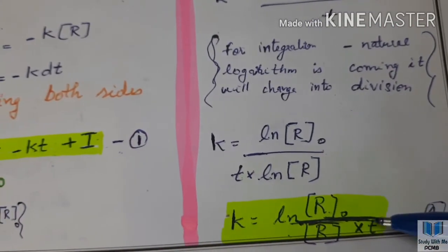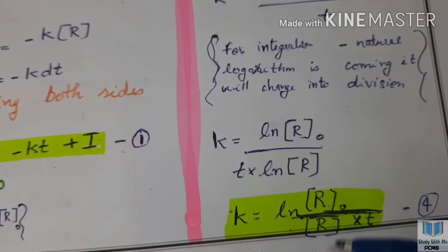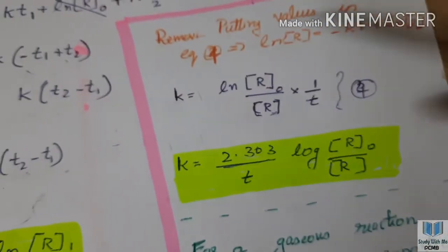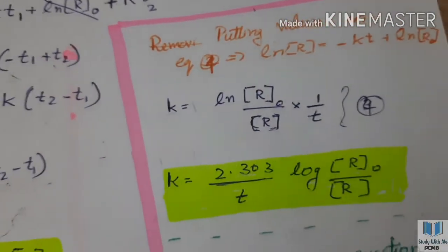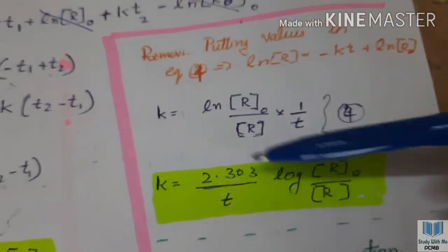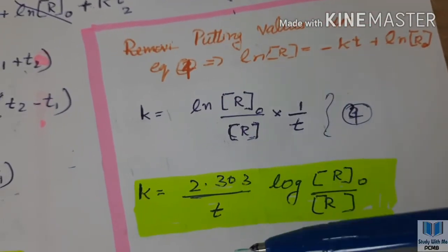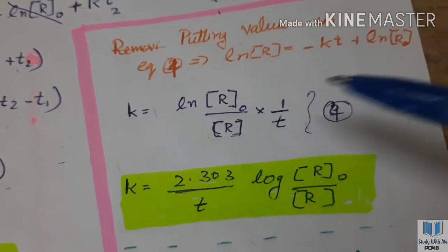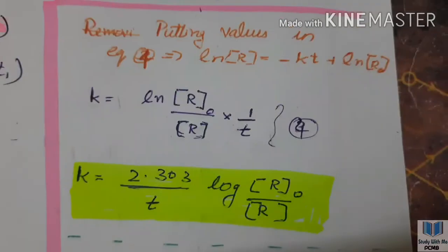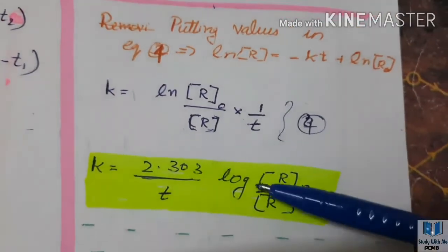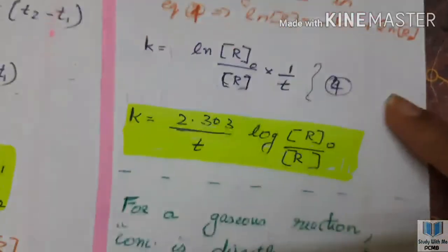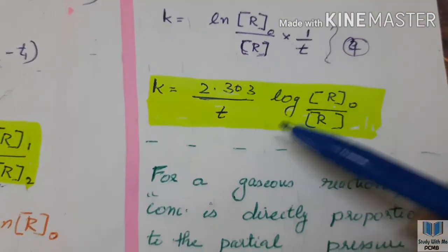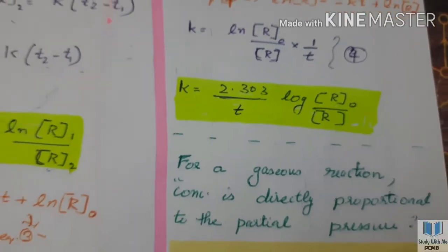Equation 4: k equals ln([R₀]/[R]) divided by t. Substituting LN with the log conversion, this equation becomes k equals 2.303 divided by t, times log of concentration of R₀ divided by concentration of R.